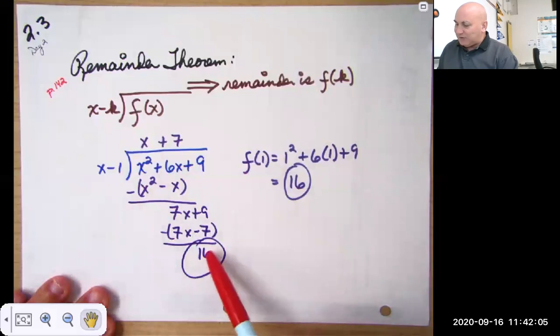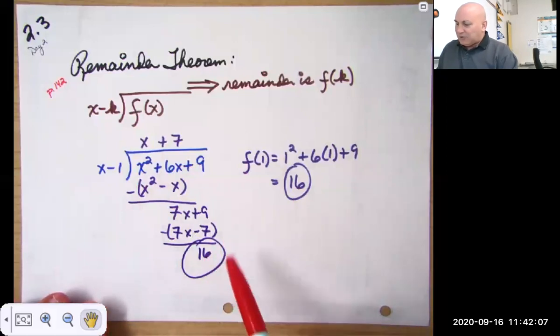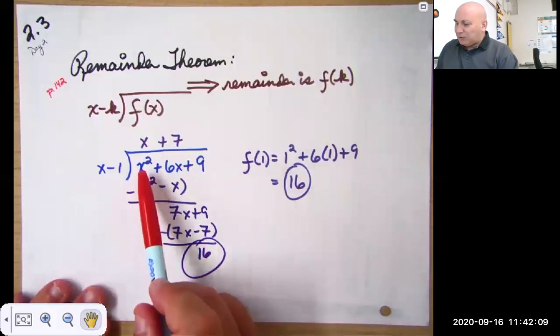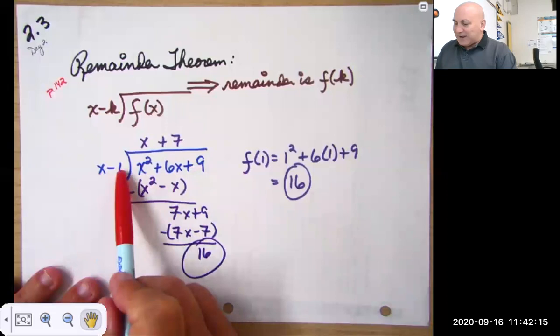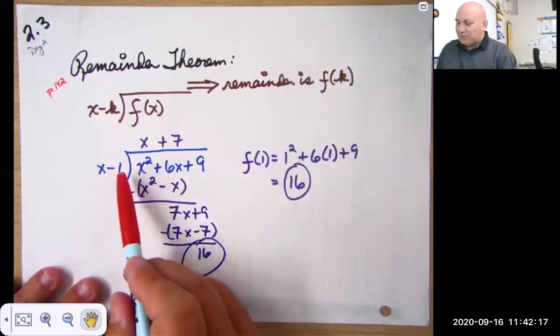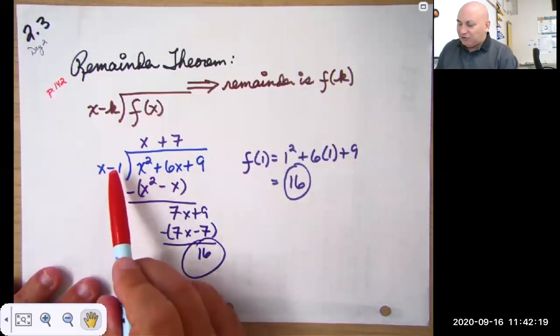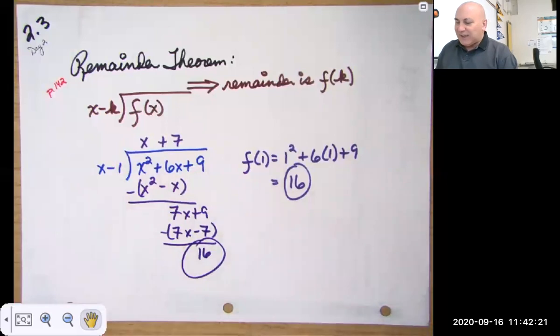It ends up being the same as you'd get with the remainder. So if I had to plug 2 thirds into this, and you didn't want to do that, you could just divide by x minus 2 thirds, or do synthetic division with 2 thirds on the outside.